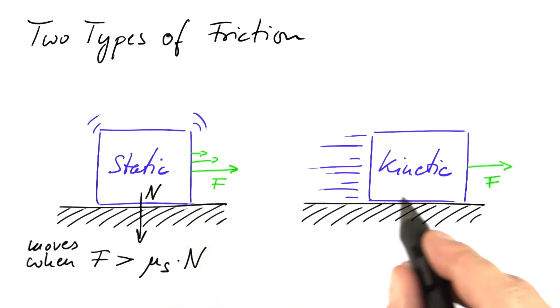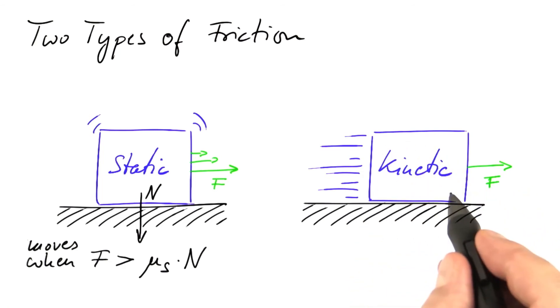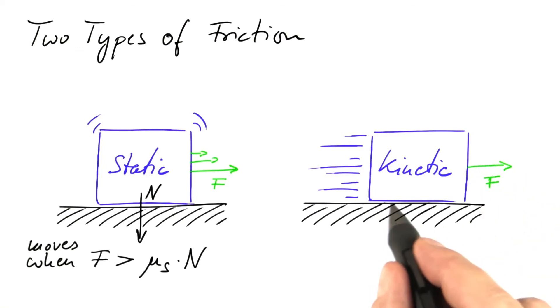Things are easier in the kinetic regime. We need to apply a certain force to keep this object going at a constant velocity. So this force is nothing else but the force exerted by friction.